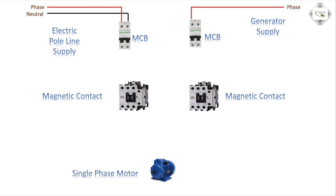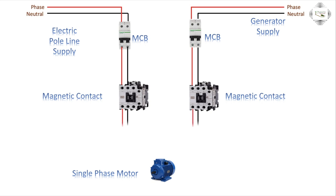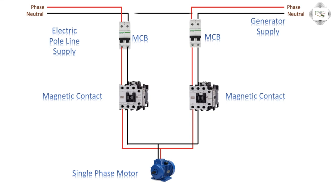Phase line MCB, neutral MCB connection, or magnetic contactor to MCB connection outgoing. Same MCB to magnetic contactor connection, or two magnetic contactor outgoing to short — neutral to neutral or phase to phase short. Single phase motor connection, or PDP or generator line neutral short.